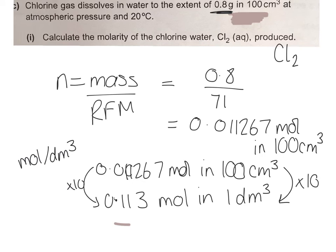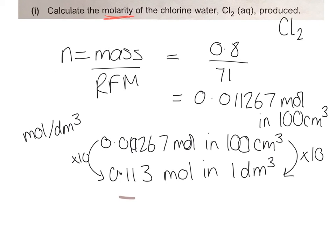Because they've asked us for the molarity, you're probably best to put your units as capital M. So the molarity of the chlorine water is going to be 0.113 capital M.